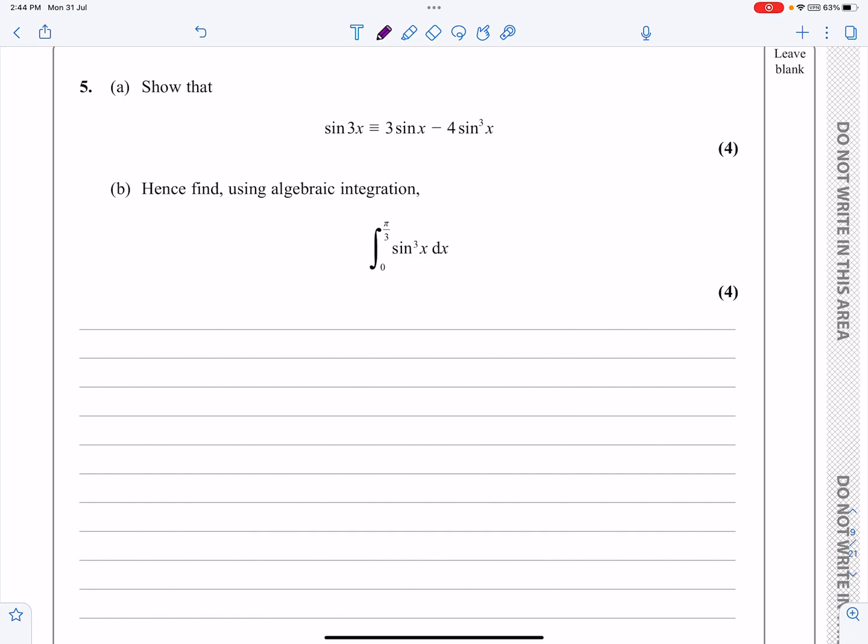As you can see, the first part is proving a trig identity using double angles, and the second part is integrating using trig functions. So let's make a start with the first part, part A.